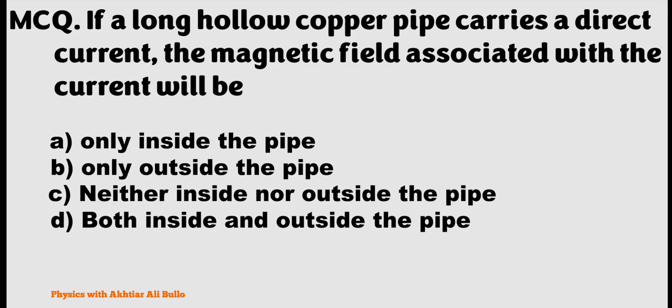So the correct option will be B, only outside the pipe. This means if a long hollow copper pipe carries a direct current, the magnetic field associated with the current will be only outside the pipe.